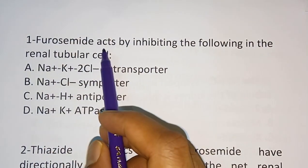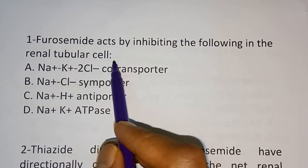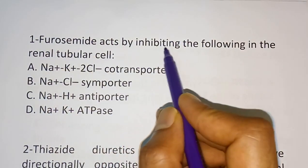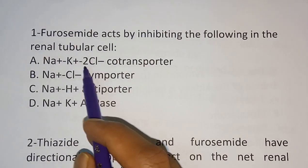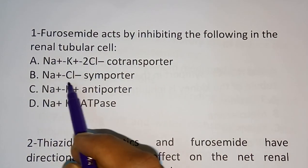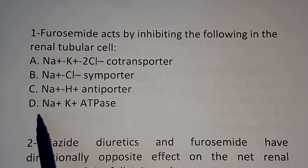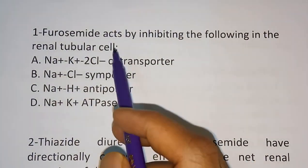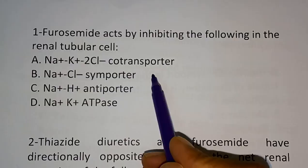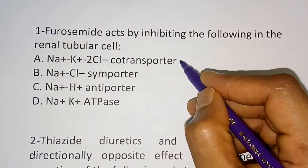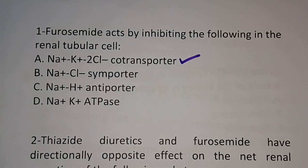Question number one: Furosemide acts by inhibiting the following in the renal tubular cell. What is the mechanism of furosemide? Option A: Sodium potassium chloride co-transporter. Option B: Sodium chloride symporter. Option C: Sodium hydrogen antiporter. Option D: Sodium potassium ATPase. The correct answer is Option A — furosemide acts by inhibiting the sodium potassium chloride co-transporter.